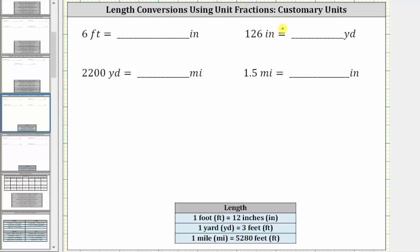In the first example, we want to convert six feet to inches. We begin by writing six feet as a fraction with a denominator of one. Looking at the conversions, notice one foot is equal to 12 inches. We can use this conversion to form a unit fraction to convert feet to inches.